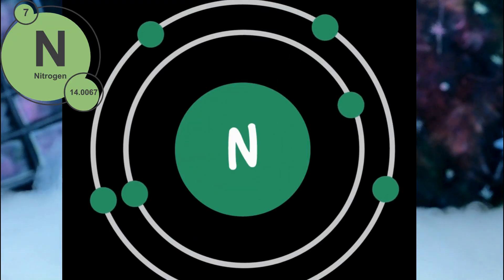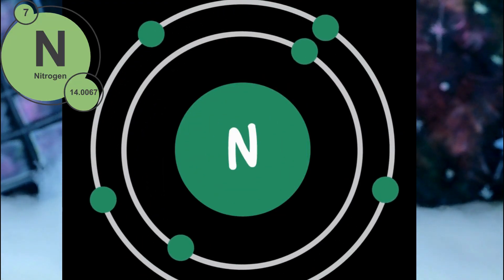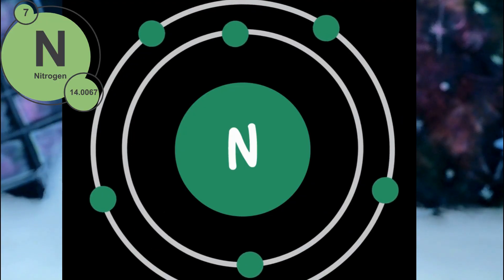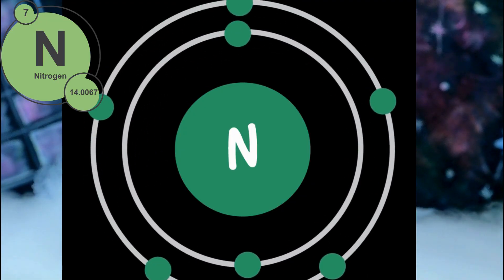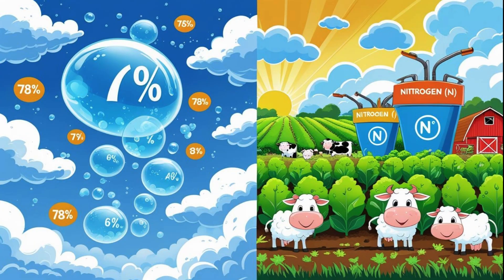Seven. Nitrogen. Nitrogen makes up most of the air we breathe, about 78%. Even though we can't see it or smell it, it's all around us. Farmers use nitrogen in fertilizers to help plants grow big and strong.